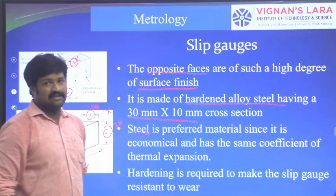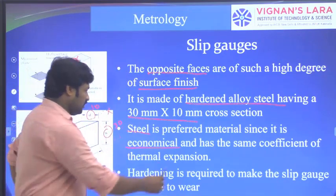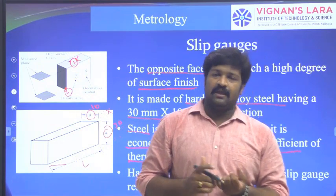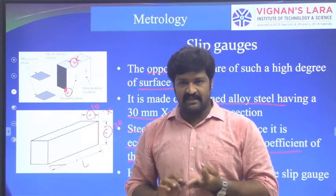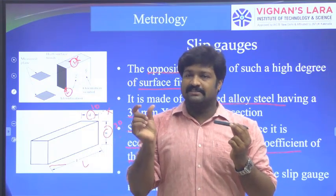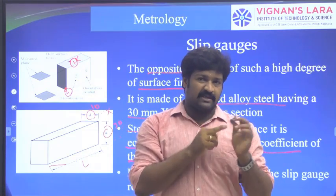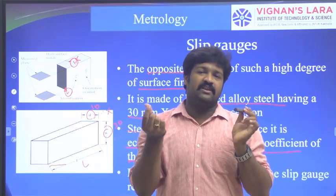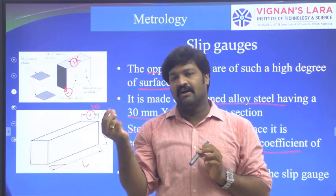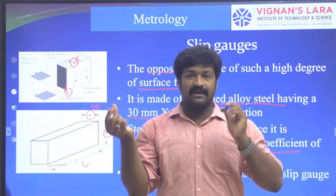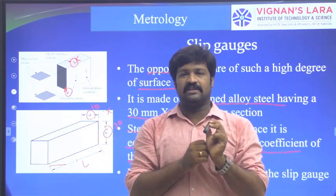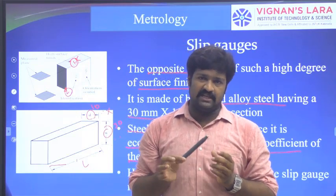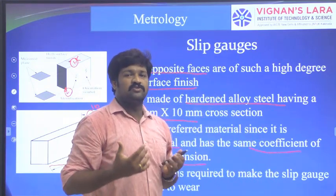Steel is preferred as a material since it is economical and has the same coefficient of thermal expansion as most engineering components. Since most components are made of steel, if the component expands with temperature, the slip gauge also expands similarly. If the slip gauges were made of a different material with a different coefficient of expansion, there would be a dimensional variation between the slip gauge and the component. To avoid that, slip gauges are also made of steel so that the thermal coefficient is uniform for both.